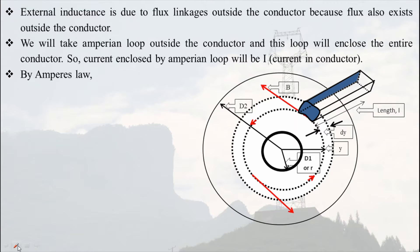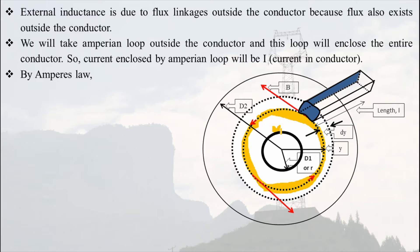Again we will use the same concepts, but here we have to take the Amperian loop outside the conductor. In case of internal inductance, we assumed the Amperian loop inside the conductor; here we take it outside. This loop will enclose the entire conductor, so the current enclosed by the Amperian loop will be current i. To find inductance we need flux linkage, and to find flux linkage we need the magnetic field, which is found using Ampere's law.